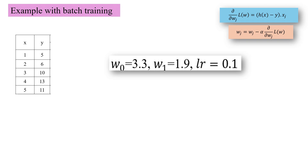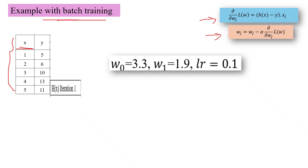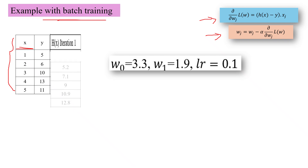Now today we are going to talk about batch training. We have a small sample set of five data points with only one x dimension, so we have two weights w0 and w1, and the learning rate is 0.1. The initial w0 is 3.3 and w1 is 1.1. For reference, we have written the weight update formula showing how the weight update is done and how the new weight will be calculated, after the partial derivative del/del_wj of the loss is computed.